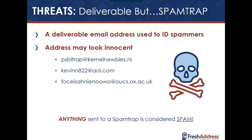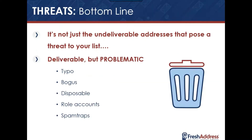The bottom line is it's not just undeliverable email addresses that pose a threat to your list — it's the deliverable but problematic, the deliverable but toxic. That's what Fresh Address is exceptionally good at: identifying these different categories and letting you know what is bogus, disposable, what are the role accounts, and what are the spam traps you have in your list.